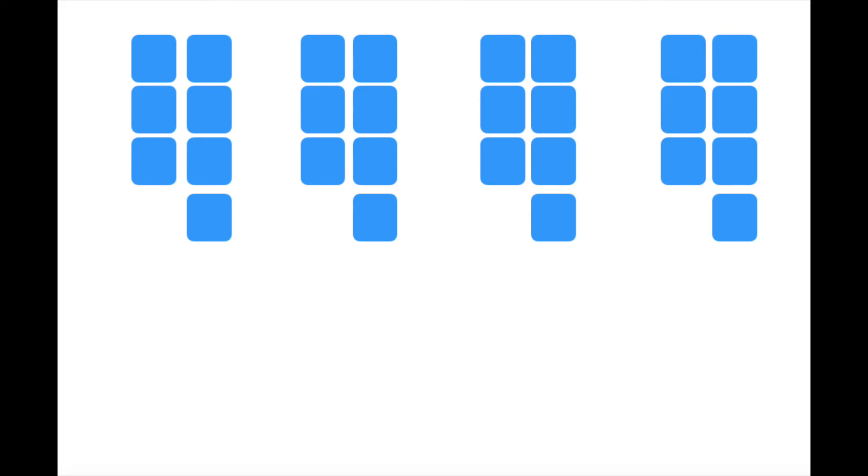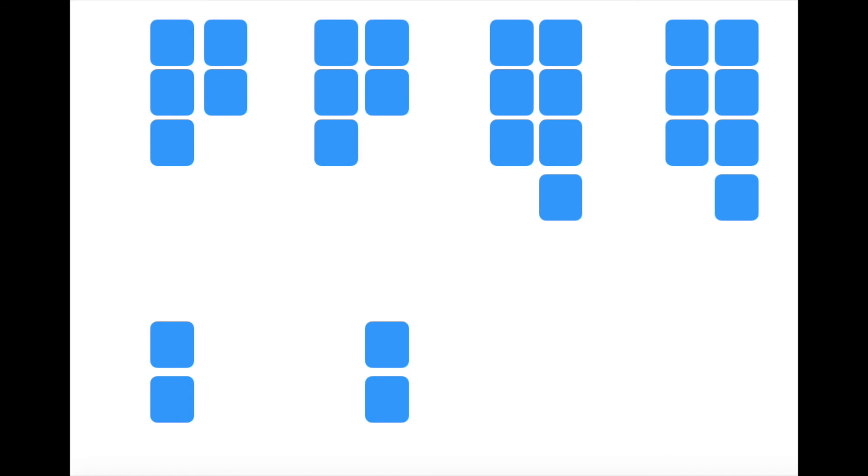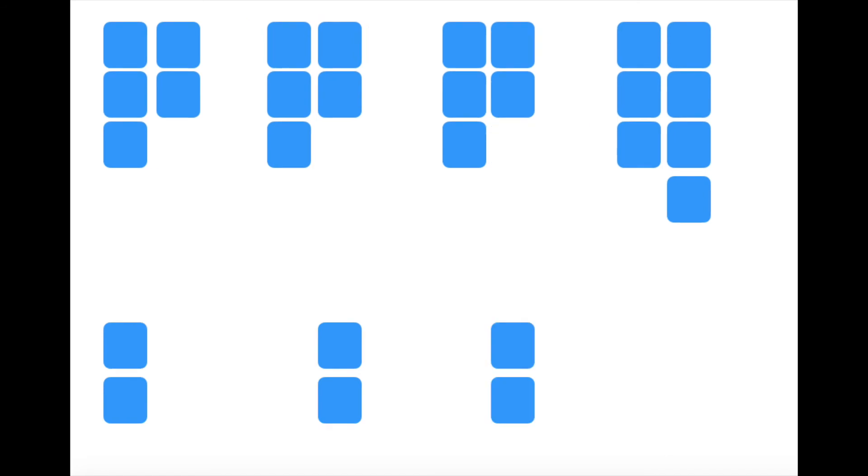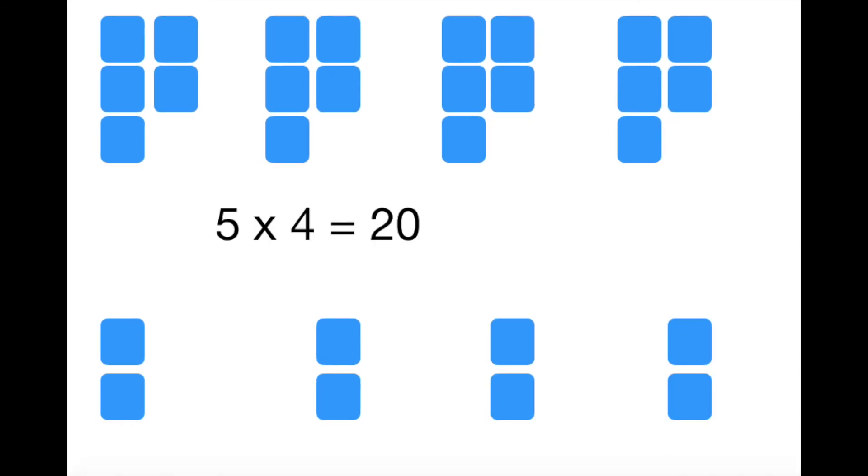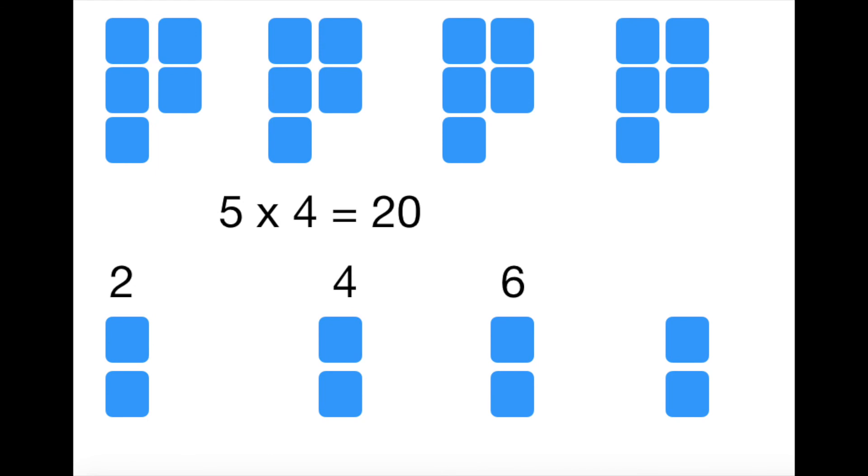If they don't know their seven times tables, they might know their five times tables. So they might make four groups of five and four groups of two. Then they might be able to do four times five equals 20. Then add up the twos: two, four, six, eight.